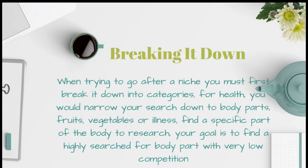When going after a niche, you must first break it down into subcategories. For example, if you want to go into the health niche, narrow your category down as much as possible. Break it down by body parts — heart health, liver health, lung health, eye health — or go into the food section and target vegetables, fruits, or certain diseases like allergies, seasonal allergies, asthma, or eczema. These are all niches you can get into within the health category.